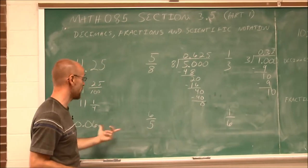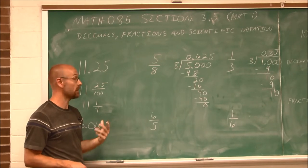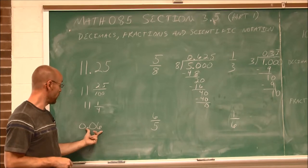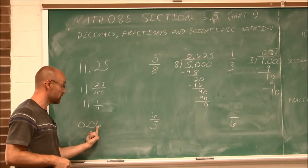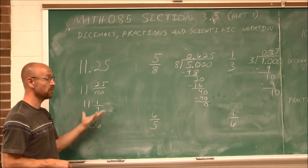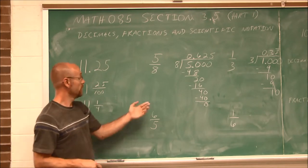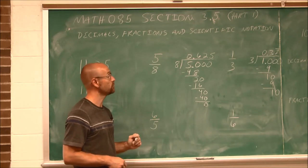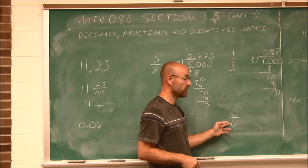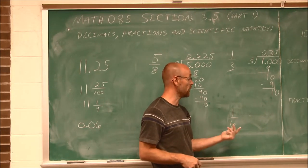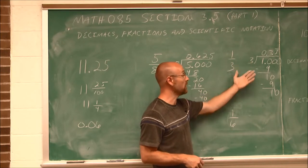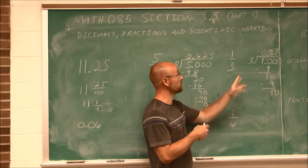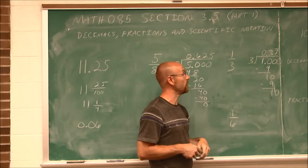Here I have three examples of each kind of example we just did. I want you to try these on your own. 0.06, which is the same thing as 6 one-hundredths, write that out as a fraction and then reduce. Here we have 6 fifths. Do this division and see what decimal number you get. It should be a repeating value.